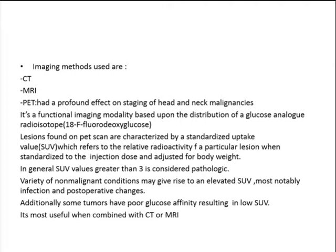The PET scan offers a very beneficial modality to image head and neck, especially in cases of malignancy, because it detects the glucose analog radioisotope fluorodeoxyglucose. This radioisotope gets concentrated in areas of increased metabolic activity, that is malignant lesions. We can measure it using the standardized uptake value (SUV). An SUV greater than 3 is considered pathologic and suggestive of malignant involvement. However, non-malignant conditions such as infection and post-operative changes can also elevate SUV, and some tumors have poor glucose affinity resulting in a low SUV, so it is most useful when combined with CT or MRI findings.